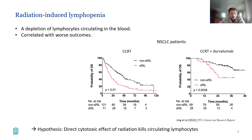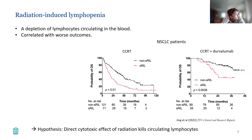This is one example — I could have picked many, as there are many such reports. This is in small-cell lung cancer patients treated with chemoradiotherapy or chemoradiotherapy plus immune treatments. Patients who experience severe radiation-induced lymphopenia fare much worse than those who don't, and this is observed across the board for different treatment sites. The current running hypothesis is that the direct cytotoxic effect of radiation kills circulating lymphocytes.